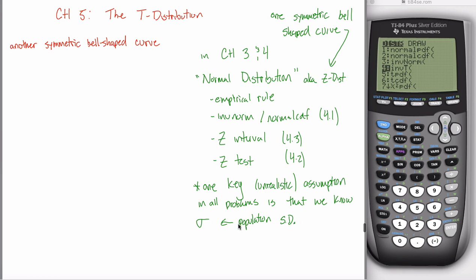Why is that unrealistic? Think about confidence intervals. In a confidence interval, you don't know the population mean, but you know the sample mean and can use that to estimate it. But you can only estimate the population mean if you already know the population standard deviation. That's kind of weird — why would you know the population standard deviation but not the population mean? To be perfectly honest, you probably wouldn't. In problems so far, I've been giving you sigma every single time.